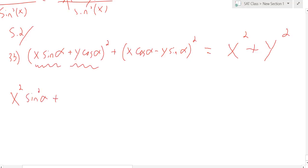plus two times both of them. So, that's 2xy sine alpha cosine alpha. I heard someone say, what's alpha? Alpha is just a variable. It's a Greek letter. They're using it just like it's x or something.